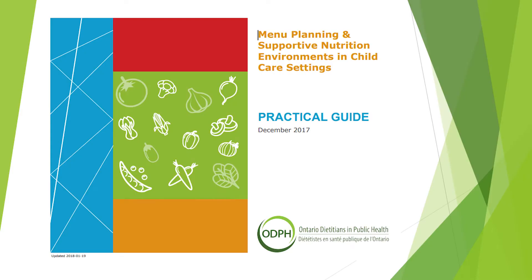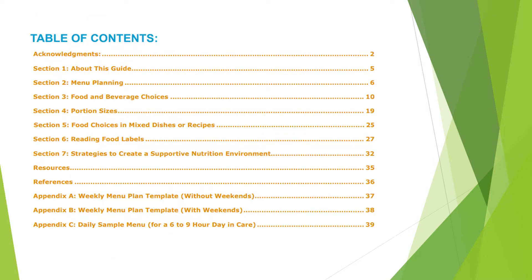Welcome to the training video on how to use the Menu Planning and Supportive Nutrition Environment Practical Guide. The guide is broken down into seven sections and we will touch on each one of them briefly in this training video. The best way to get familiar with the guide is to use it. Focus on one section at a time so it's not overwhelming. Refer to the guide to troubleshoot areas you and your staff may be struggling with, and if you can't find your answer there, contact your local health unit for further assistance.